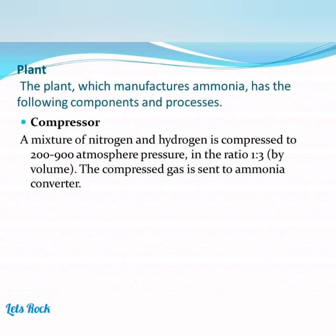Plant: The plant which manufactures ammonia has the following components and processes. Compressor: A mixture of nitrogen and hydrogen is compressed to 200 to 900 atmospheres pressure, in the ratio 1:3 by volume. The compressed gas is then sent to the ammonia converter.